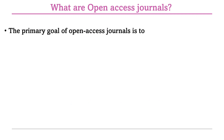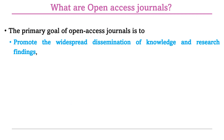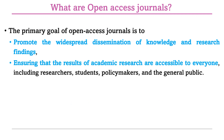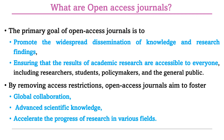The primary goal of open access journals is to promote the dissemination of knowledge and research findings. They ensure that the results of academic research are accessible to everyone — researchers, students, policy makers, and the general public — since research should be documented and available without subscription restrictions. By removing access restrictions, open access journals aim to foster global collaboration, advance scientific knowledge, and accelerate research progress across different fields.